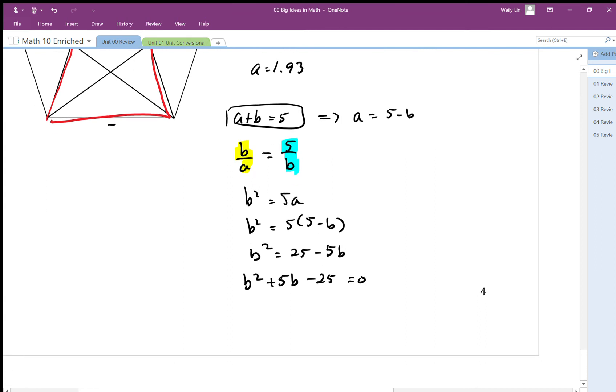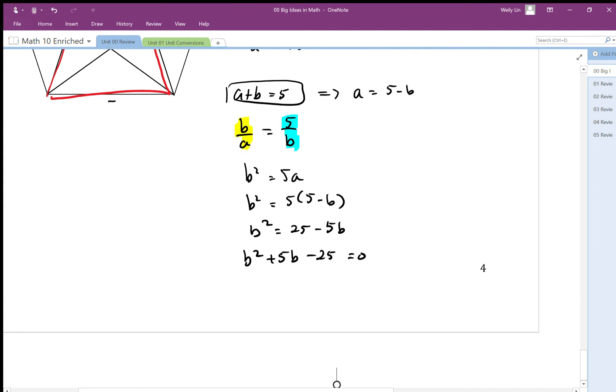The quadratic formula looks like this: to solve for b, we take the negative of the middle number plus minus, we square that middle number and subtract 4 times the first number, which is 1, times the last number, all divided by 2 times the first number.